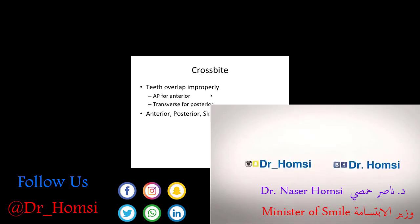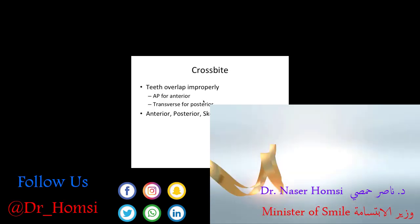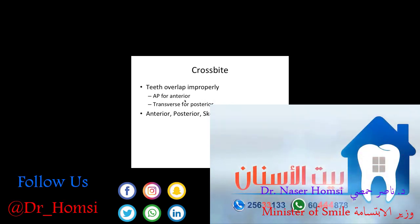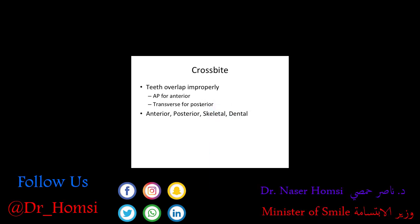So what is a crossbite? Teeth overlap improperly. If it's an anterior crossbite, it's in the anterior-posterior direction. If it's a posterior crossbite and the posterior teeth are overlapping improperly, it's in the transverse direction. If you see a crossbite, you can characterize it as either anterior or posterior, and either skeletal or dental.